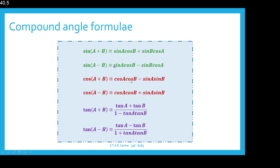So we have compound angles, meaning that in the brackets, instead of just sine theta, cos theta, or tan theta, we have a sum of two angles. So we have sine of angle A plus angle B, cos of angle A plus angle B, tan of angle A minus B and so on. For each combination we have a formula or an identity that can be used.